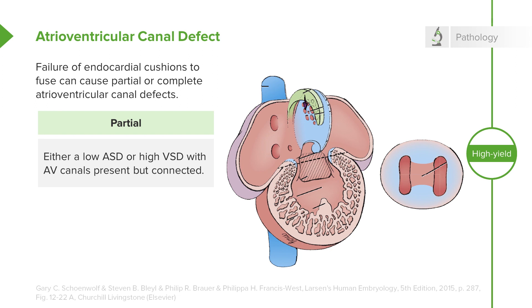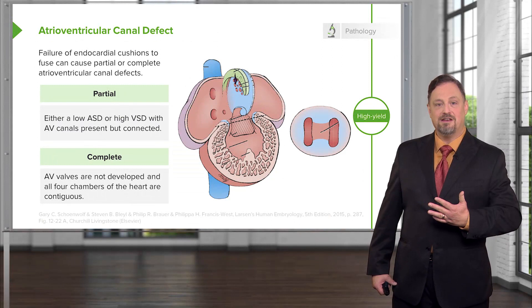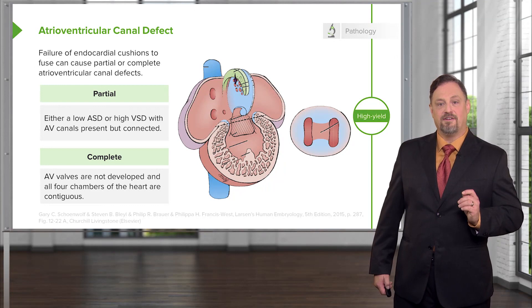A complete atrioventricular canal defect, however, is a very serious problem because instead of a four-chambered heart, you have a single-chambered heart with venous blood entering the right atrium and just spilling into the left atrium, left ventricle, and right ventricle. You can have severe cyanosis and mixing of blood as this happens.